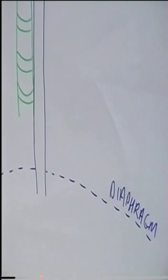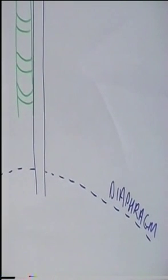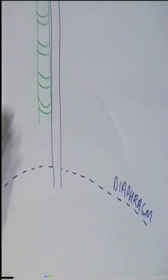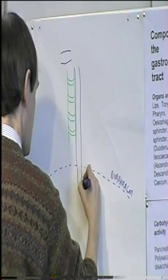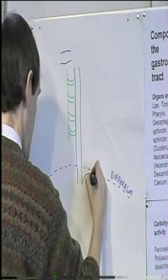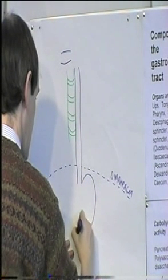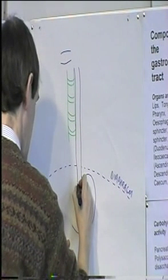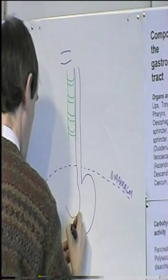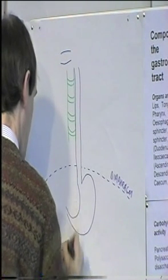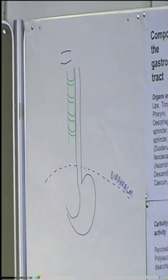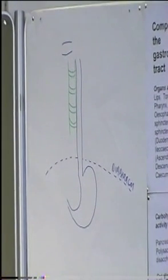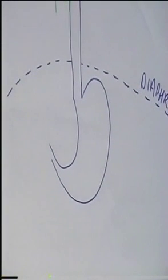So the food has been transported from the mouth through the thoracic cavity into the abdominal cavity. Once in the abdominal cavity it enters the stomach, and the stomach has two curves — a greater curvature and a lesser curvature.